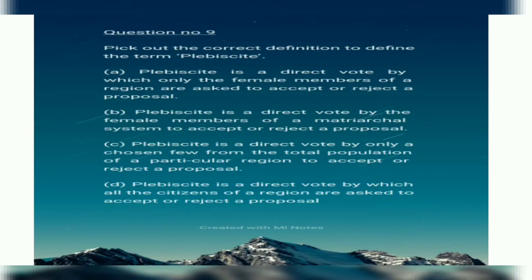Moving on to our next question. Pick out the correct definition to define the term 'plebiscite.' Option A: A direct vote by which only female members of a region are asked to accept or reject a proposal. Option B: A direct vote by female members of a matriarchal government. Option C: A direct vote by only a chosen few from the total population. Option D: A direct vote by which all citizens of a region are asked to accept or reject a proposal.